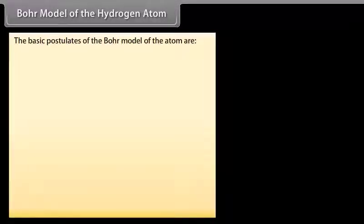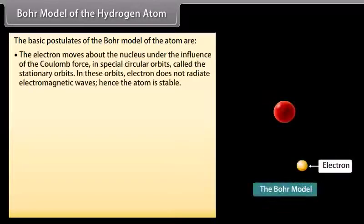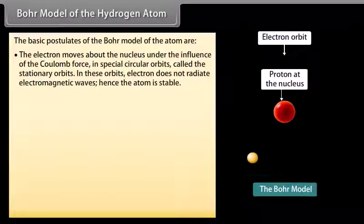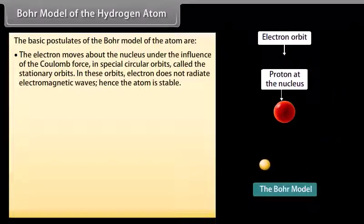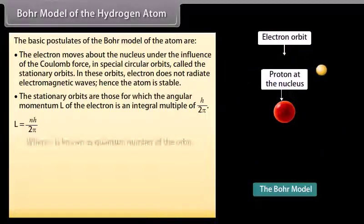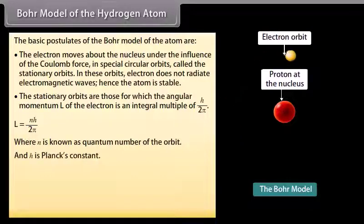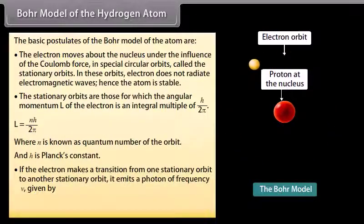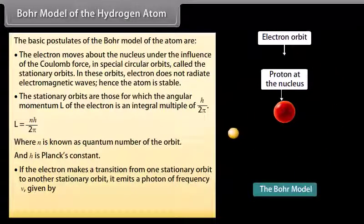The basic postulates of the Bohr model of the atom are: the electron moves about the nucleus under the influence of the Coulomb force in special circular orbits called the stationary orbits. In these orbits the electron does not radiate electromagnetic waves, hence the atom is stable. The stationary orbits are those for which the angular momentum L of the electron is an integral multiple of h/2π: L = nh/2π, where n is the quantum number of the orbit and h is Planck's constant. If the electron makes a transition from one stationary orbit to another, it emits a photon of frequency ν = (E_i − E_f)/h.